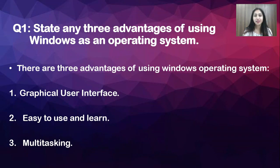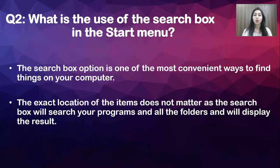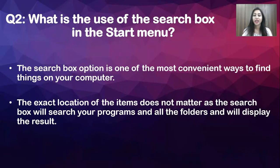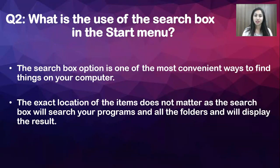For the second question — what is the use of the search box in the start menu — the answer is: the search box option is one of the most convenient ways to find things on your computer. Using the search box, you can find your files and folders very easily. The exact location of the items does not matter, as the search box will search your programs and all the folders and display the results — it can search and display your file and folder from any location.